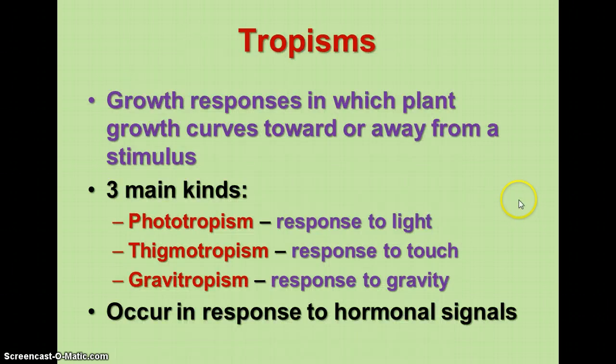Tropisms are responses of plants. Plants do respond — even though they don't get up and walk around, they do have motions that occur. These are in response to some kind of stimulus, and they occur as a result of hormones that affect the growth of the plant.